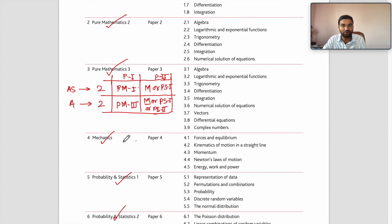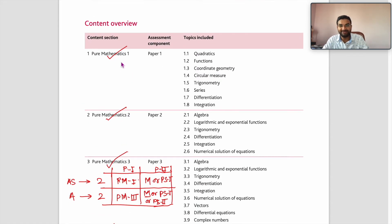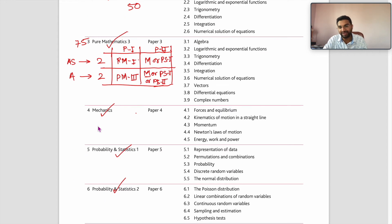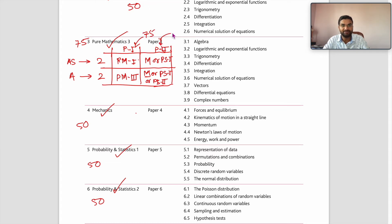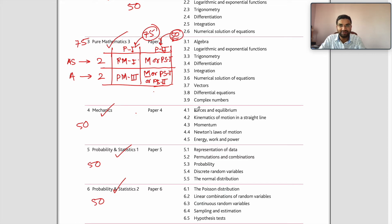Looking at the marks distribution: Pure Mathematics 1 is 75 marks, Pure Mathematics 2 is 50 marks, Pure Mathematics 3 is 75 marks, Mechanics is 50 marks, Probability & Statistics 1 is 50 marks, and Probability & Statistics 2 is 50 marks. So more or less, Paper 1 is 75 marks and Paper 2 is 50 marks.